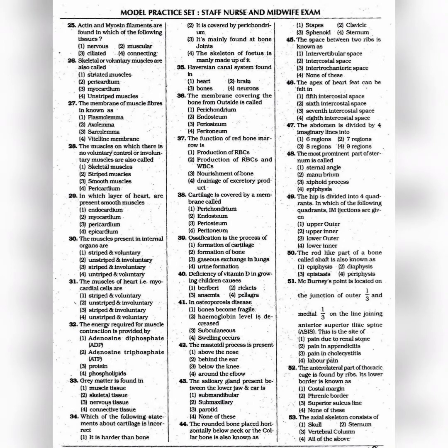Question 25: Actin and myosin filaments are found in which tissue — the answer is option 2: Muscular. Question 26: Skeletal or voluntary muscles are also called as — the answer is option 1: Striated muscles. Question 27: The membrane of muscle fiber is known as — the answer is option 3: Sarcolemma. Question 28: Muscles on which there is no voluntary control, or involuntary muscles, are also called as — the answer is option 3: Smooth muscles.